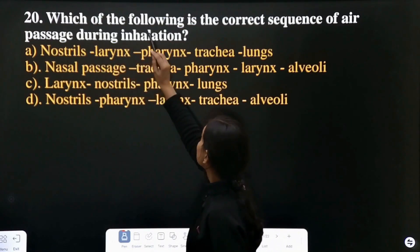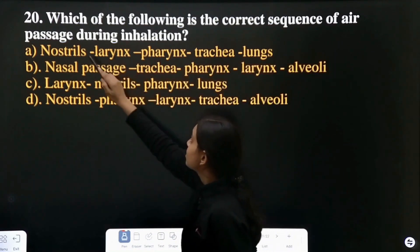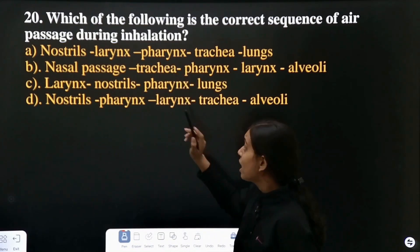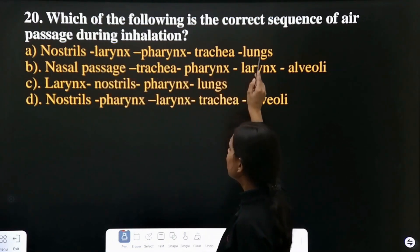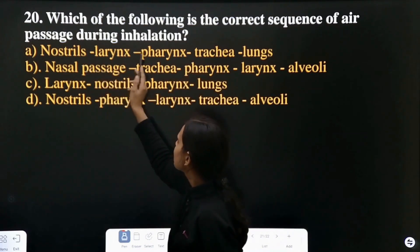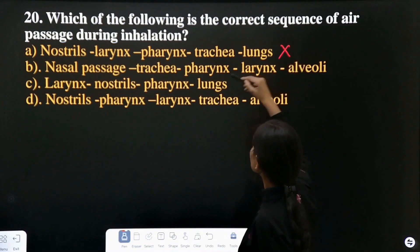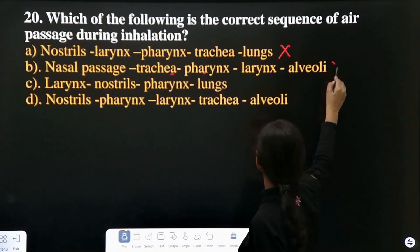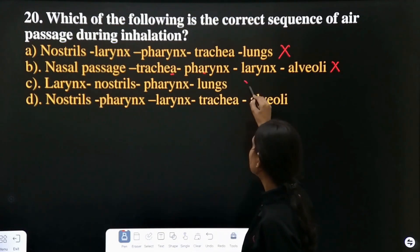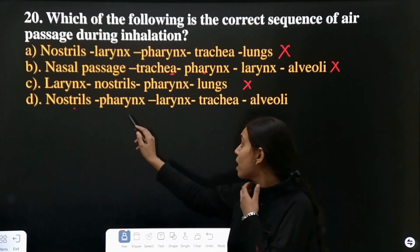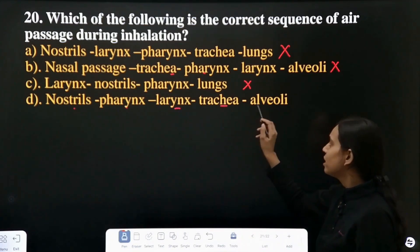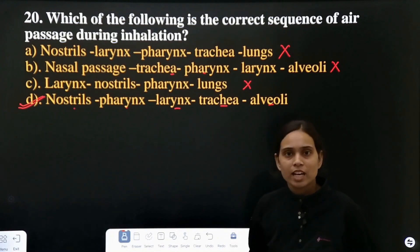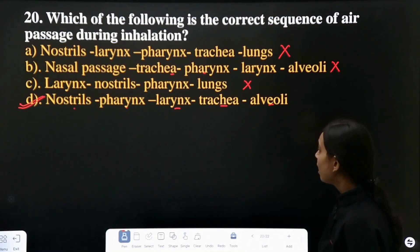Question 20: which of the following is the correct sequence of air passage during inhalation? The correct option is D — this is the correct passage of inhalation. These are our 20 questions. Thank you.